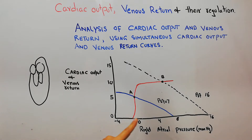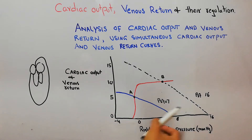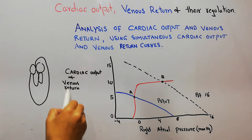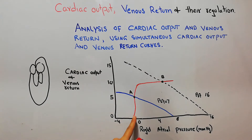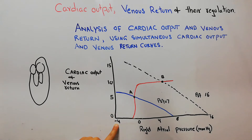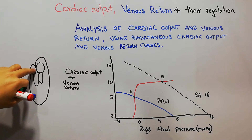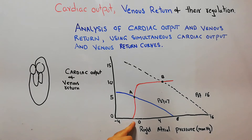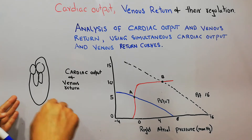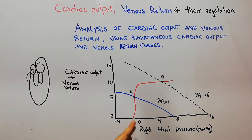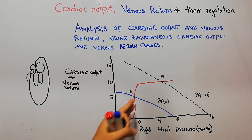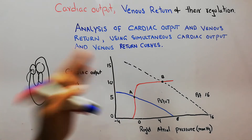When we plot the cardiac output curve, the right atrial pressure is on the x-axis and cardiac output and venous return are on the y-axis. Initially, when the right atrial pressure is below zero or negative, there is no venous return and zero cardiac output. But as the pressure builds up and blood starts returning to the heart, there is an increase in cardiac output.